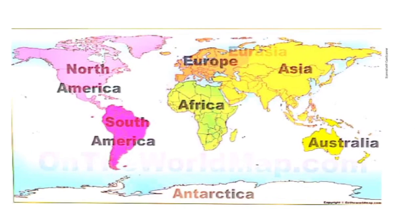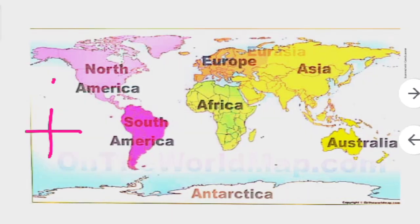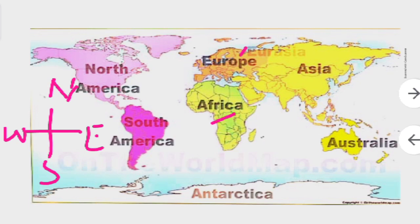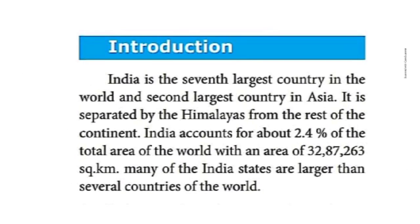Looking at the world map, this is North America in the northern part, South America in the southern part, Africa, Europe, Asia, Australia, and Antarctica - these are the seven continents. The Himalayas are protecting India from the rest of the continent and from external danger.